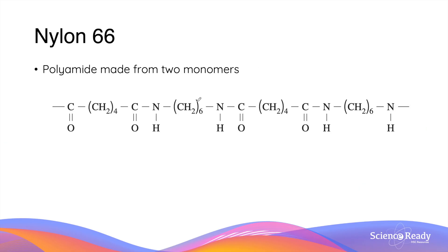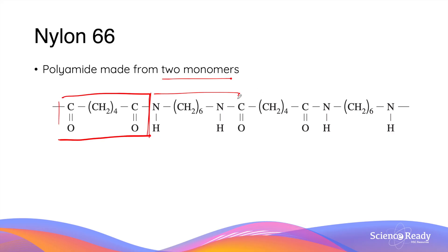Another common example of a polyamide is nylon 66, which results from the reaction between two monomers — a dicarboxylic acid and a diamine. The reaction between the two results in an amide functional group. The reason it is called nylon 66 is because each monomer contains six carbon atoms.